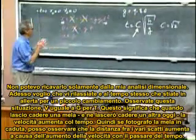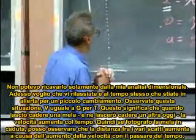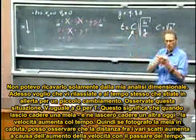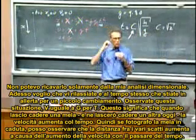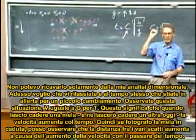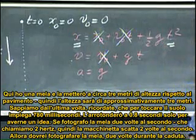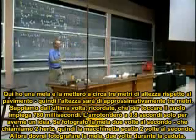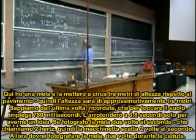Now I want you to relax and at the same time get a little alert for a change. Look at this situation: V equals G T. That means when I drop an apple — and I'm going to drop another one today — the velocity increases with time. So if I strobed this apple while it was falling, I would see the separation when it strobes increasing with time, because the velocity goes up with time. I have an apple here, about three meters from the floor.